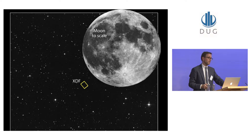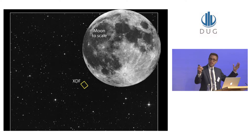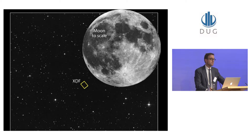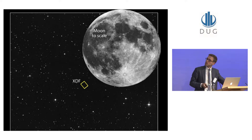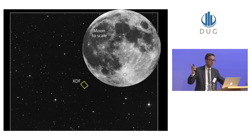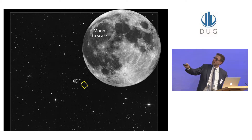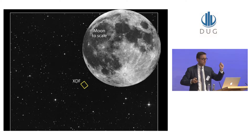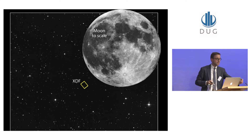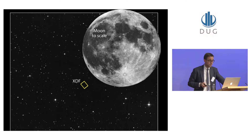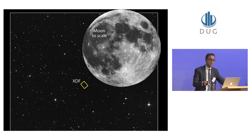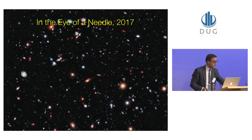To give you a sense of how meaninglessly small we are in the vastness of the cosmos, I want you to focus on this little yellow square in this picture. I put the Moon there to scale because everybody's familiar with how the Moon appears in the sky. This yellow square is really, really, really tiny — in fact, it's so small that it would fit inside the eye of a needle held at arm's length.